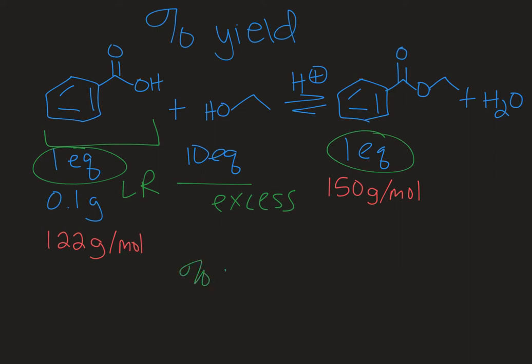So the percent yield is defined as how much product you isolated, so what you got, over the theoretical yield which is the maximum amount that you could have obtained if everything went perfectly. So basically what you got over the theoretical yield and then we multiply that by a hundred to get a percentage.